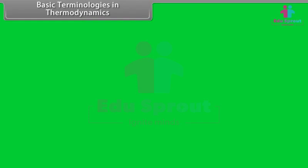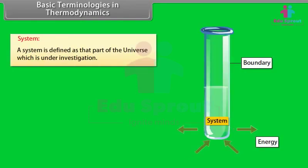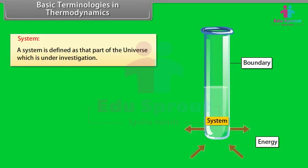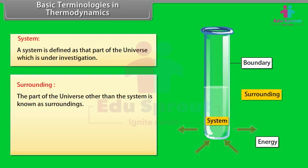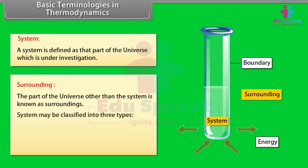Basic terminologies in thermodynamics. A system is defined as that part of the universe which is under investigation. For example, if we are studying the effect of temperature on the properties of water, then water will be taken as the system. The part of the universe other than the system is known as surroundings. A system may be classified into three types: open system and closed system.